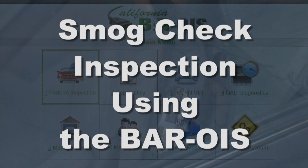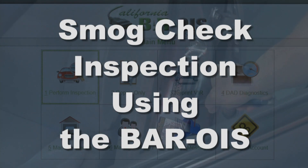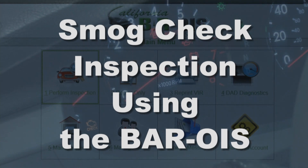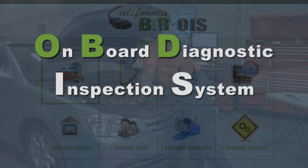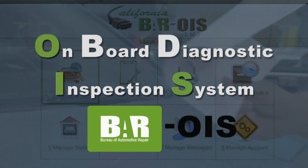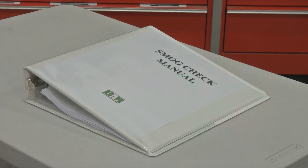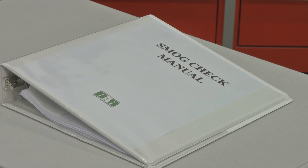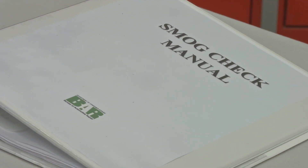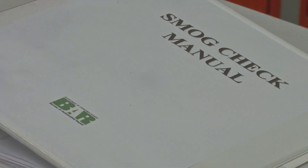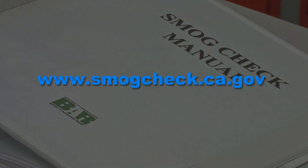This video is intended to provide a basic understanding of the procedures involved in conducting a smog check inspection using a BAR OBD inspection system, or BAR OIS. Refer to the latest version of the Smog Check Manual for full inspection procedures and to determine which vehicles require an OIS inspection. The Smog Check Manual can be obtained from BAR's website at www.smogcheck.ca.gov.